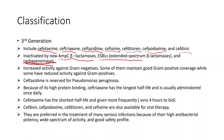Third-generation cephalosporins have very good gram-negative coverage, and some of them also have good gram-positive coverage. Cefotaxime, ceftriaxone, cefdinir, cefpodoxime, cefditoren, and cefixime all have good gram-positive and very good gram-negative coverage. However, ceftazidime has very minimal gram-positive coverage and is mainly reserved for anti-pseudomonal activity as an anti-pseudomonal cephalosporin. All other third-generation cephalosporins have good gram-positive and very good gram-negative coverage.